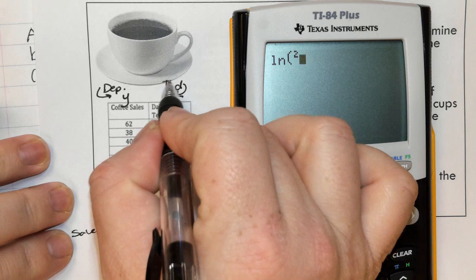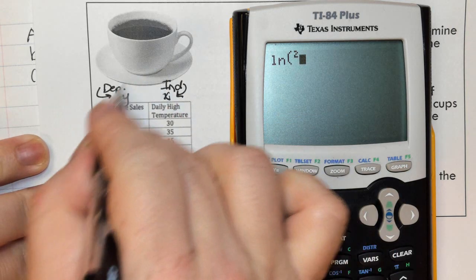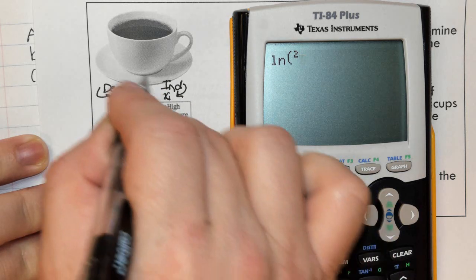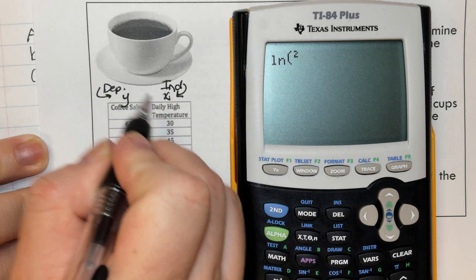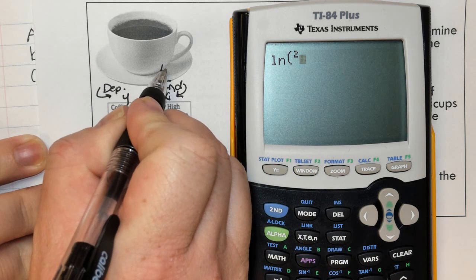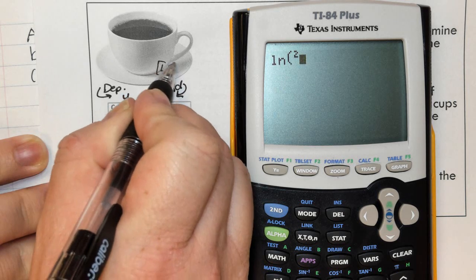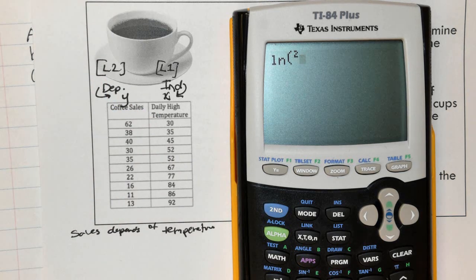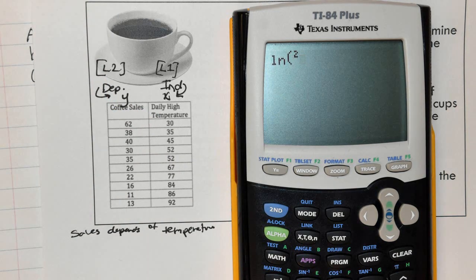When you place these into your calculator using linear regression to find the line of best fit, your X will always be in the L1 list and the L2 list will always be the Y or the dependent.